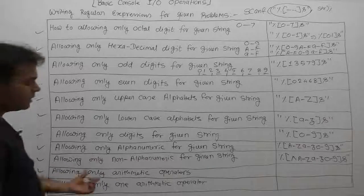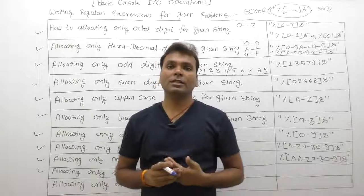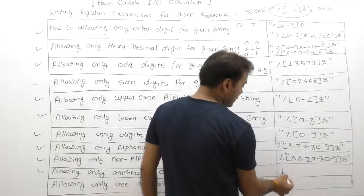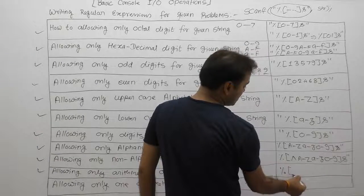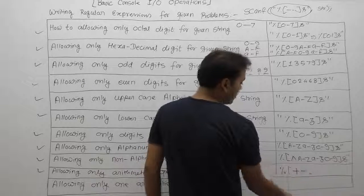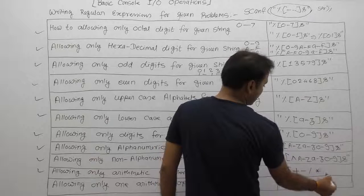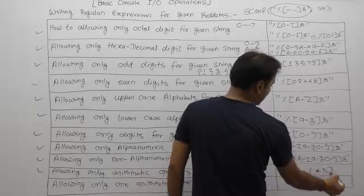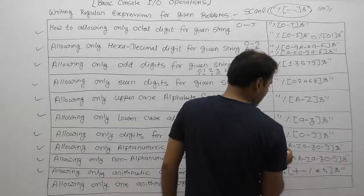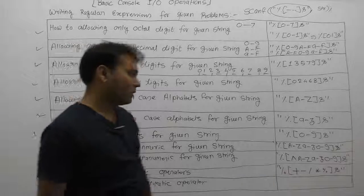Next, allowing only arithmetic operators. Suppose a particular case requires only arithmetic operator input at runtime. You allow the list of arithmetic operators: plus, minus, division, multiplication, and modulo. Write them inside square brackets, then close and add 's'. This is the regular expression for arithmetic operators. The last case is allowing only one arithmetic operator — similar to the previous case but with one operator.